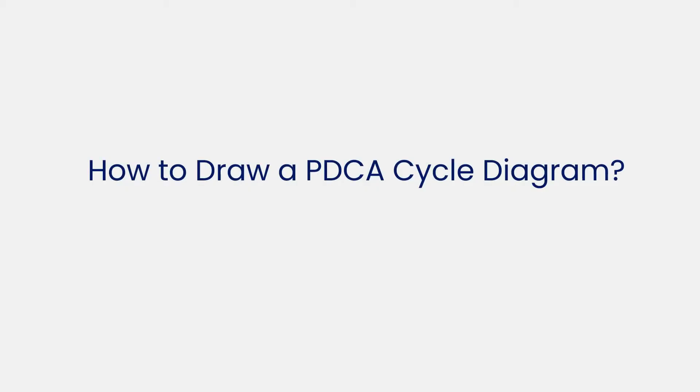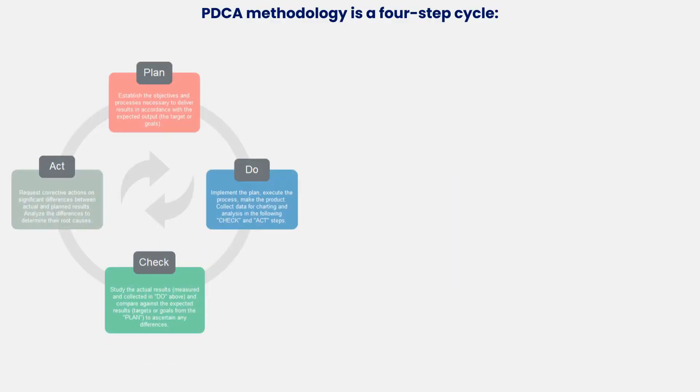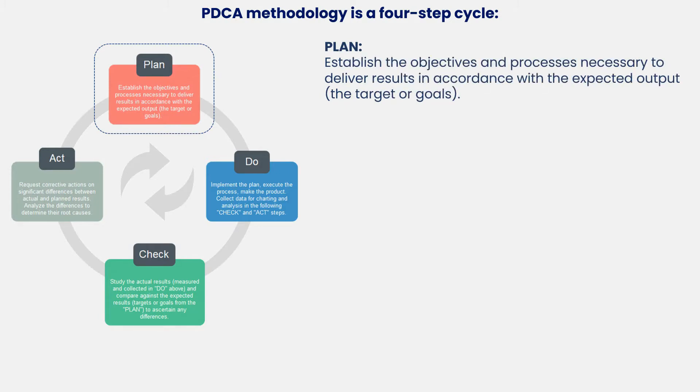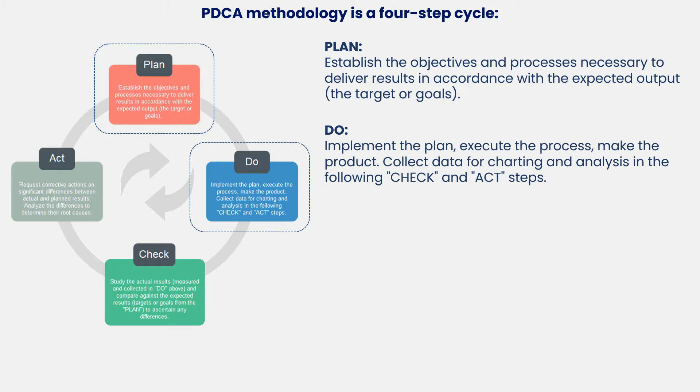Now let's learn how to draw a PDCA cycle diagram. PDCA methodology is a four-step cycle. The Plan establishes the objectives and processes necessary to deliver results in accordance with the expected output, the target, or goals. During the Do phase, you implement the plan, execute the process, or make the product. You also collect data for charting and analysis in the following Check and Act steps.